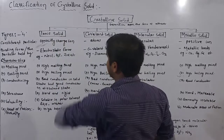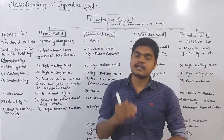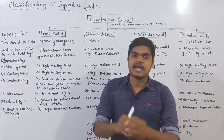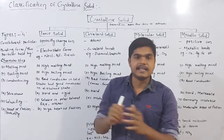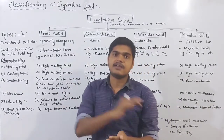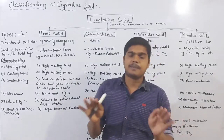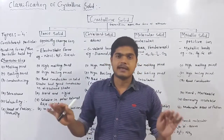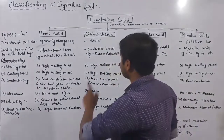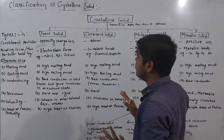Now, crystalline solid. We are going to study the first class — crystalline solid definition. The constituent arrangement is in a regular manner and order. So the particular arrangement is in regular order.